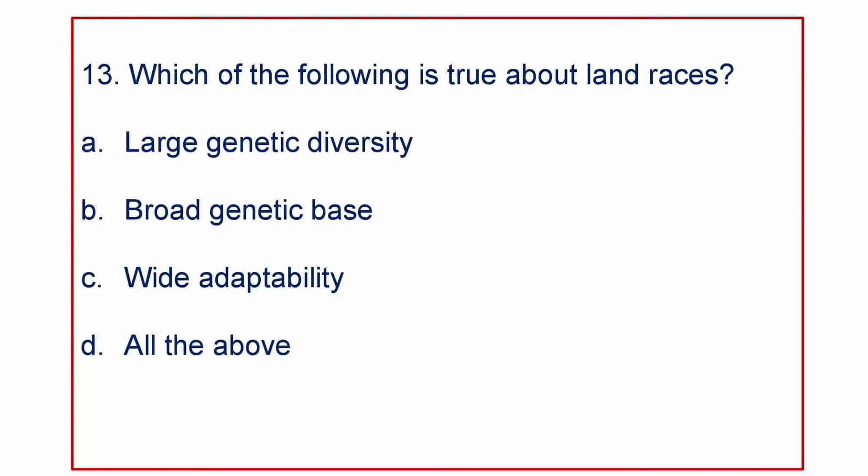Next question: which of the following is true about land races? A) Large genetic diversity, B) Broad genetic base, C) Wide adaptability, or D) All of the above. The answer is All of the above — all three are true about land races.